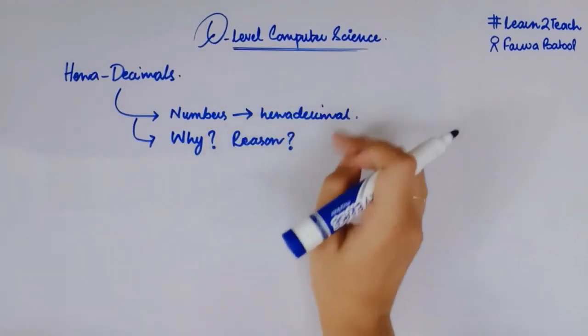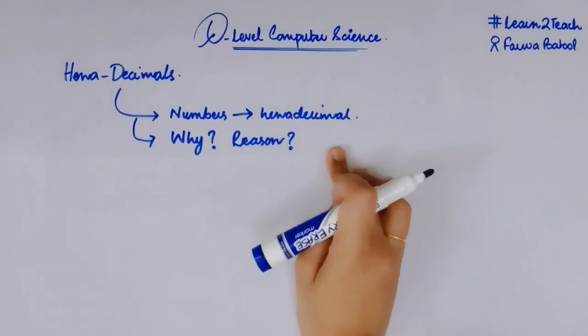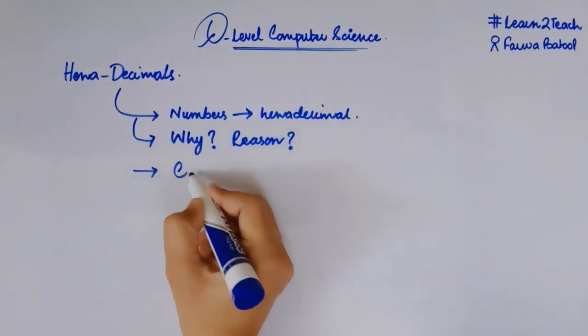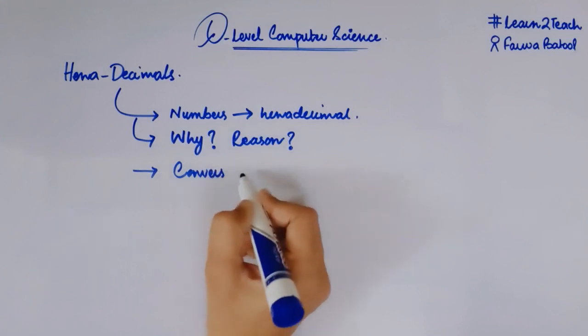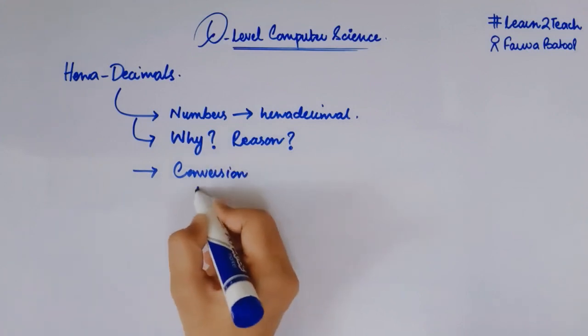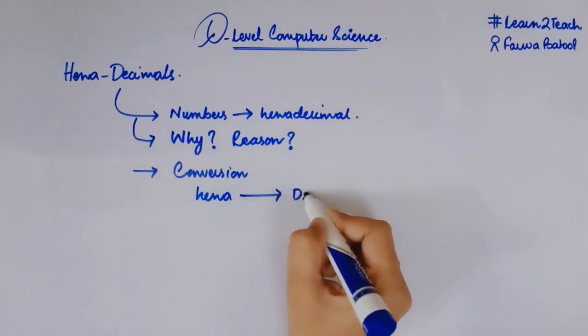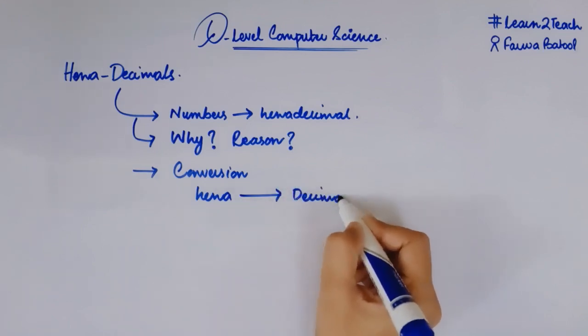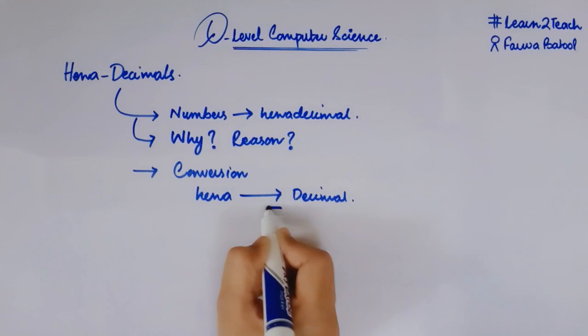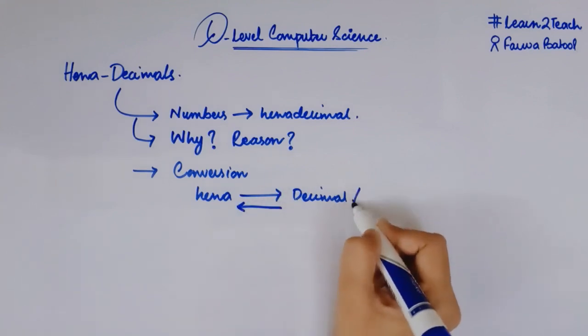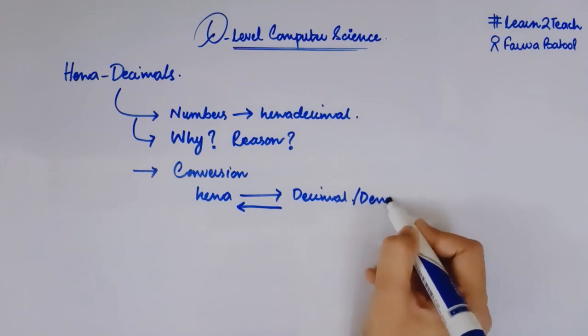Then we have the third one that is conversion. Inside conversion, we must know how a hexadecimal number can be converted into denary, and this can be reversed as well—how a denary or decimal number can be converted into hexadecimal.